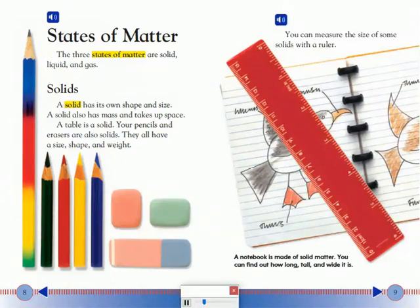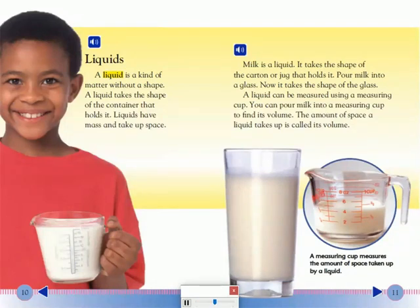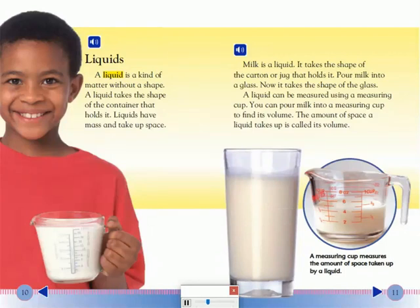You can measure the size of some solids with a ruler. Liquids: A liquid is a kind of matter without a shape. A liquid takes the shape of the container that holds it. Liquids have mass and take up space. A liquid takes the shape of the carton or jug that holds it. Pour milk into a glass. Now it takes the shape of the glass.